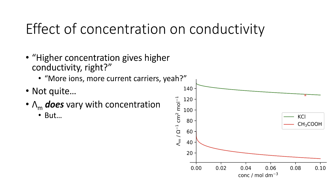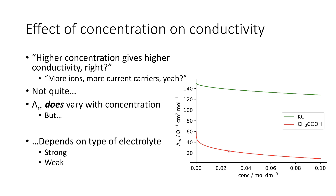This seems extremely strange, so we need to unravel why that's the case. We also see two types of electrolytes: a strong electrolyte such as potassium chloride, and a weak electrolyte such as ethanoic acid. Not only does it depend on concentration, but it also depends on the type of electrolyte. The weak electrolyte having lower conductivity probably doesn't surprise us, because we would expect fewer current carriers, but this is in contravention with what we see at increasing concentrations.